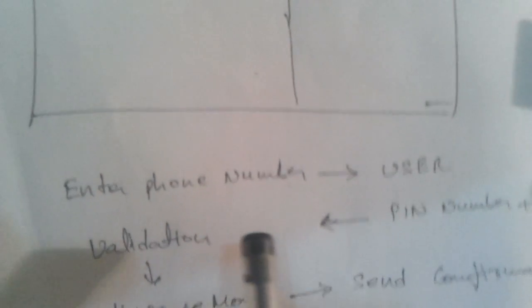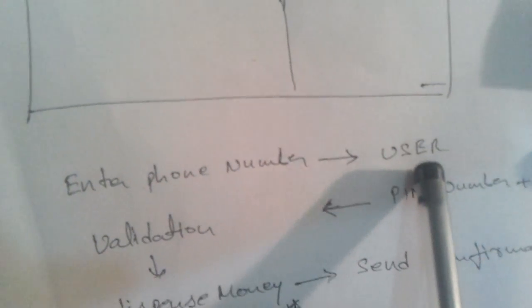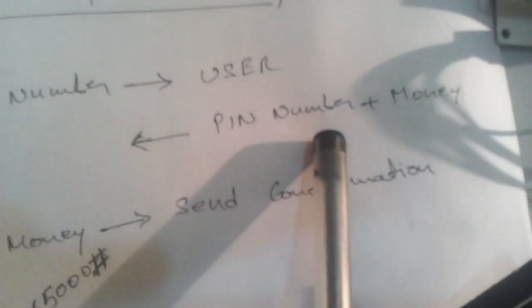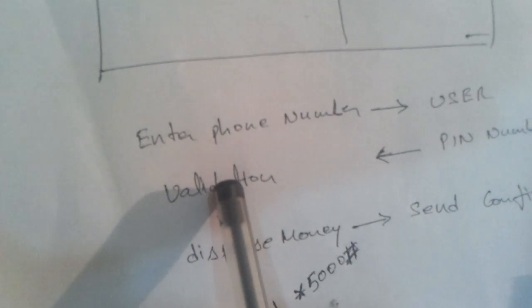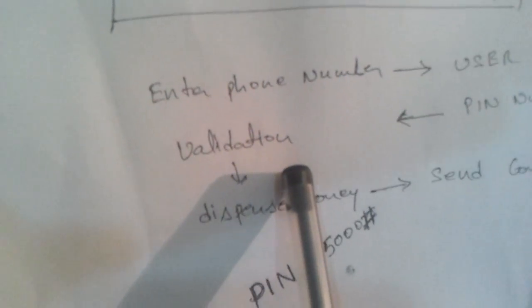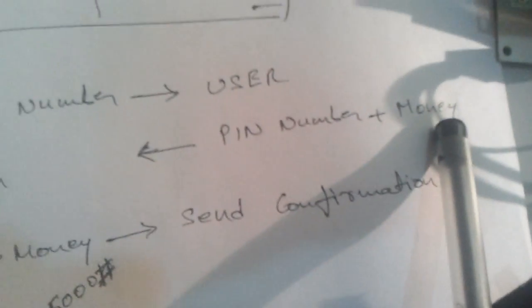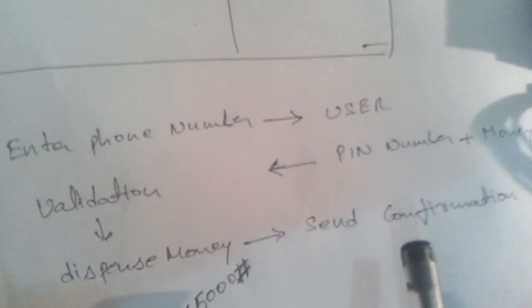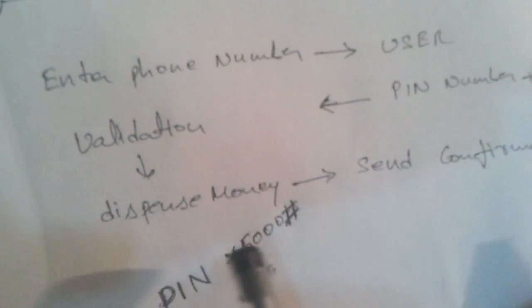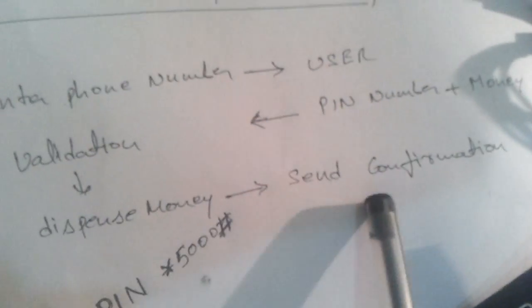We can add any number of users. As soon as the user's mobile number is entered, the system sends a message to the user, who in turn sends the passcode and the money to be withdrawn. This message is received by the system and validated. Once validation is done, it dispenses the money. If validation fails, it says invalid identity. After dispensing, a confirmation is sent back to the user.